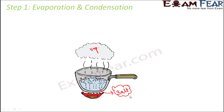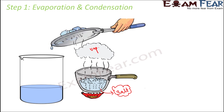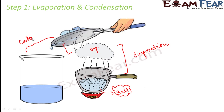You might wonder: I started with a glass of water — where did it go? That water got converted into water vapor during evaporation. To recover it, you take a cold lid with ice placed on top and hold it just above the saucepan. The water vapor condenses on the cold lid, converting back into liquid water. This is condensation.